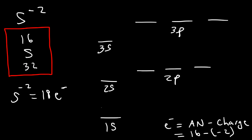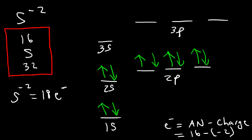Filling up: 1, 2, 3, 4, 5, 6, 7, 8, 9, 10, 11, 12, 13, 14, 15, 16, 17, 18 — so it's completely filled. The sulfide ion is diamagnetic since it contains only paired electrons.